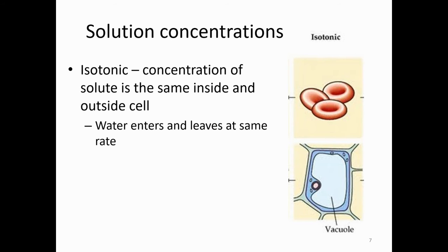Let's talk about solution concentrations and which way water moves. First is isotonic — 'iso' means the same — so there's the same concentration of water inside and outside the cell. In this case our blood cells, shown in the top picture, are in a normal environment. Water moves in and out at the same rate because the concentration is equal. Isotonic means equal concentration inside and out, so water moves in and out at the same rate.